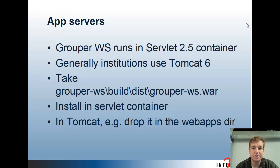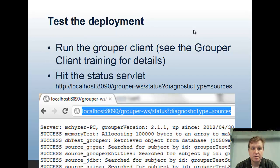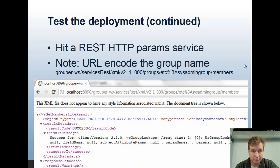Grouper web services generally run in a servlet 2.5 container, and people use Tomcat 6 mostly, but you could use anything. You can deploy your war file however you want — one way is to take the war file and put it in the servlet container's webapps directory in Tomcat. Once you have deployed it, you can test it using the Grouper client — see the Grouper client training for details — or you can hit the status servlet. If you're on localhost on port 8090, you can hit status with the query parameter diagnostic type equals sources, and it'll try to hit all the databases and sources, allocate some memory, and make sure everything is working.